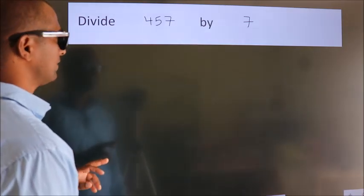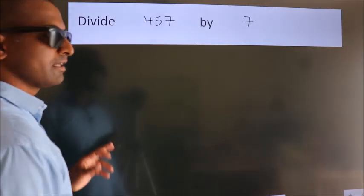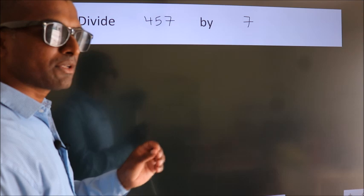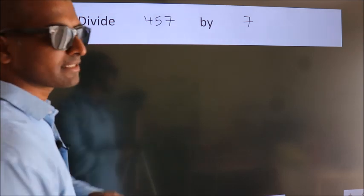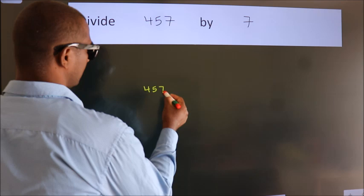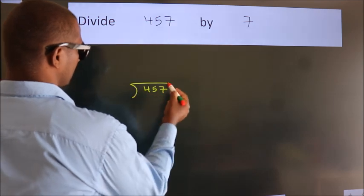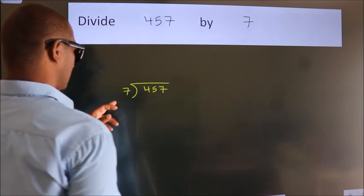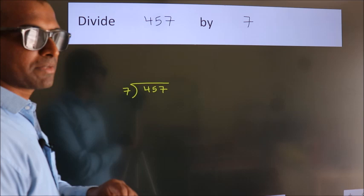Divide 457 by 7. To do this division, we should frame it in this way. 457 here, 7 here. This is your step 1.